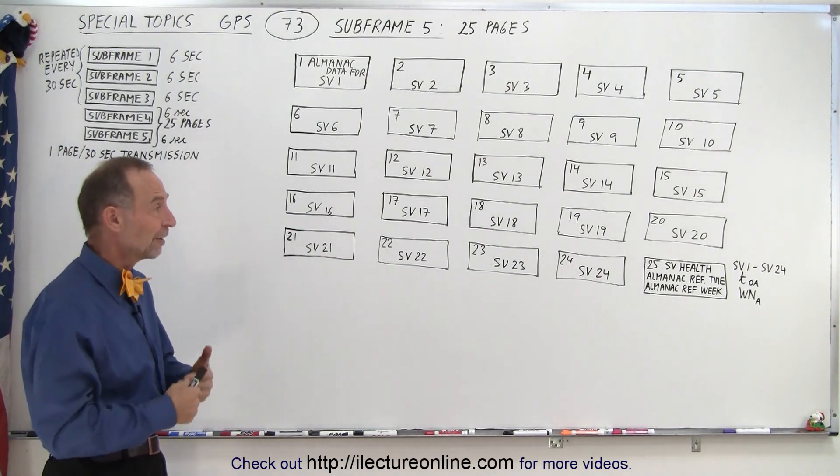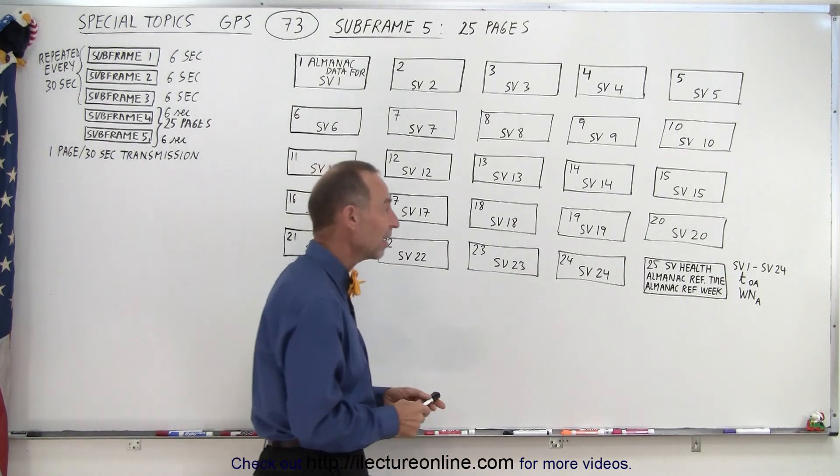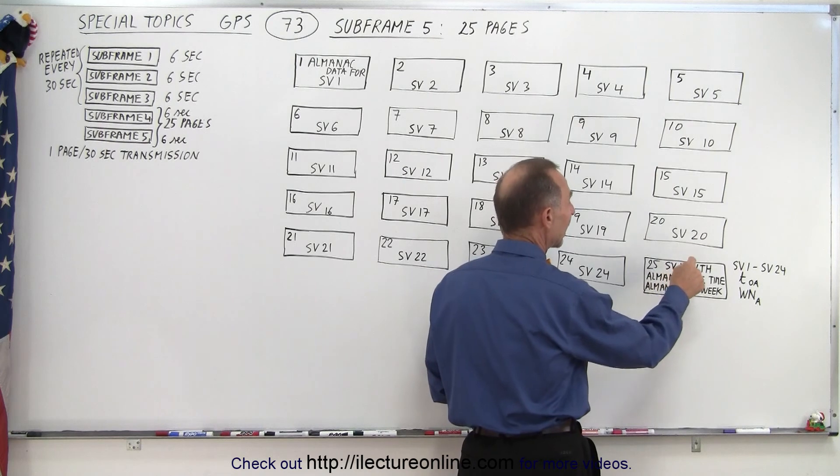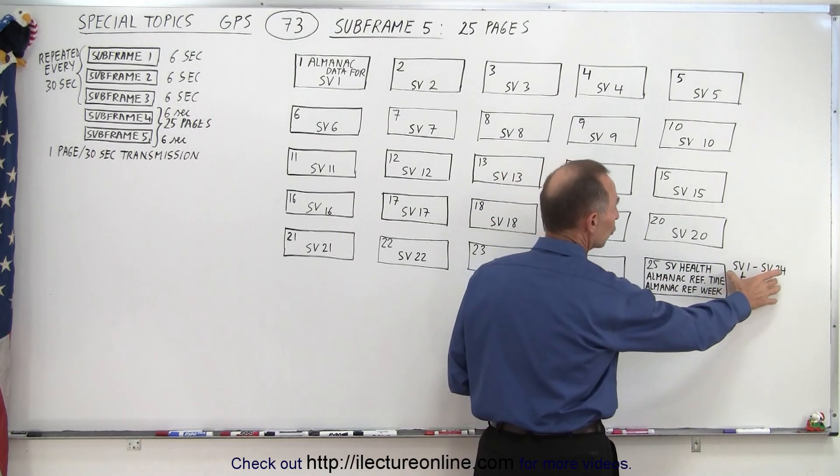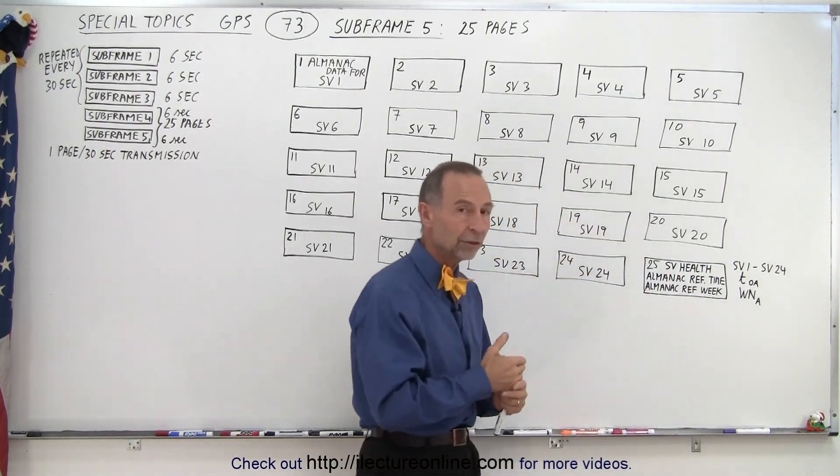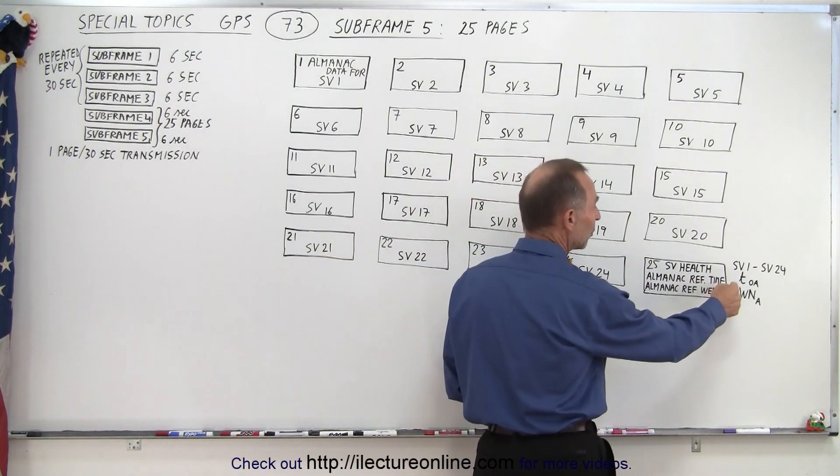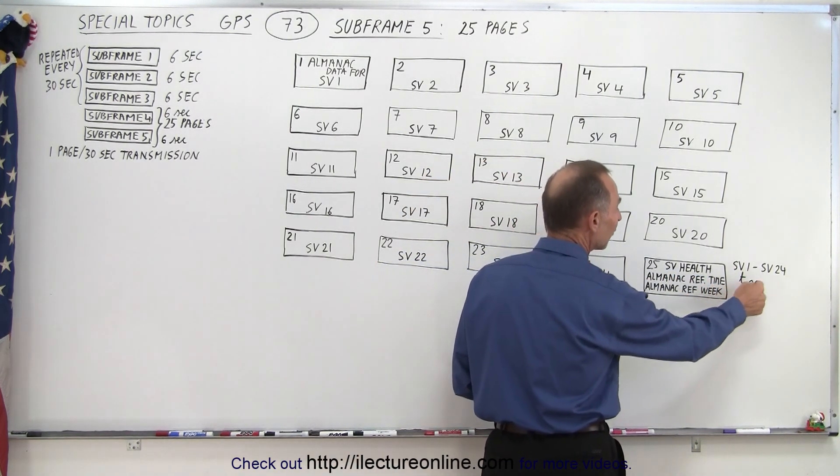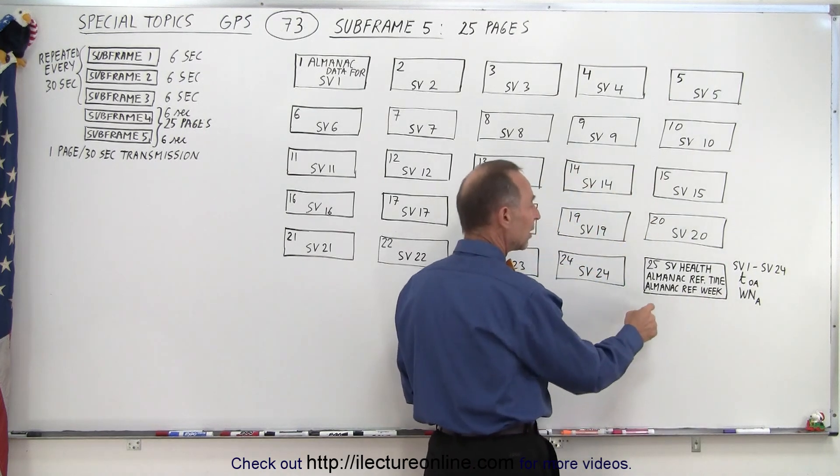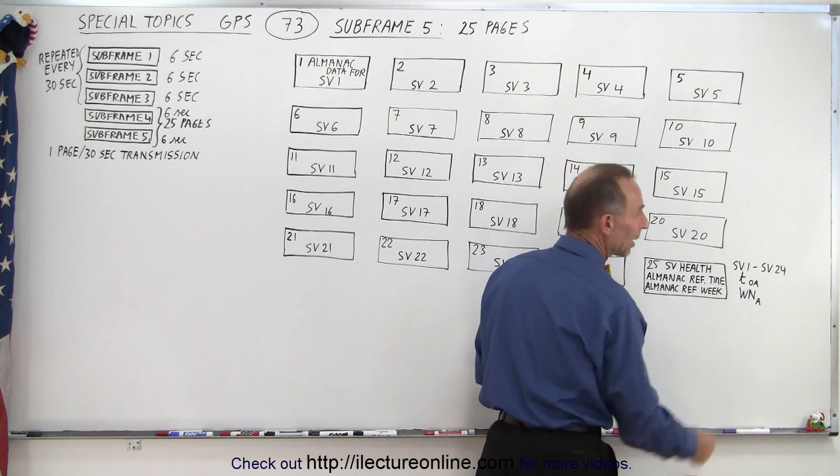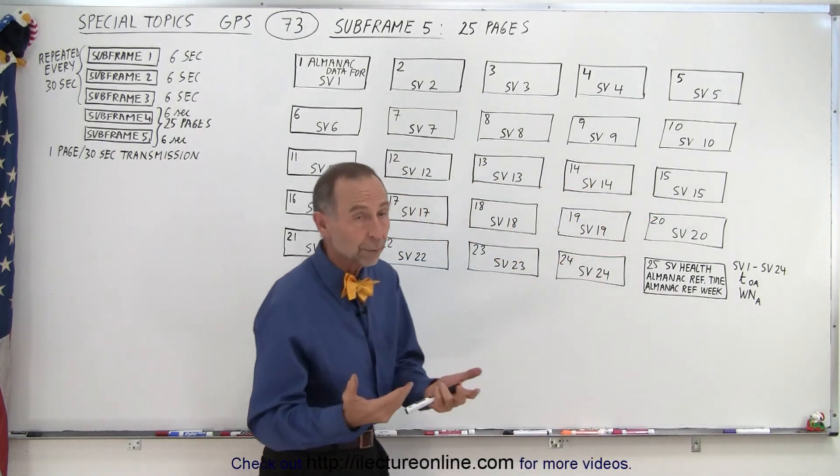The only one that's different is the very final page, page 25, which contains three main things. It contains the SV health information for the first 24 satellites, one through 24. It contains an almanac reference time, which is TOA, time of almanac. And then it contains the almanac reference week, that's the week number of the almanac, because we want to know what week we're in.